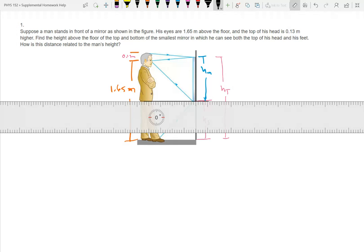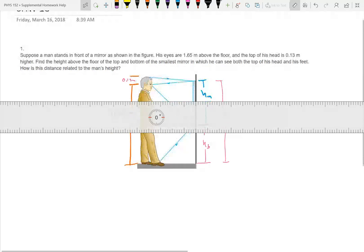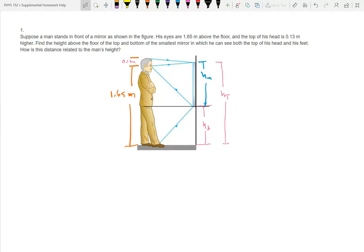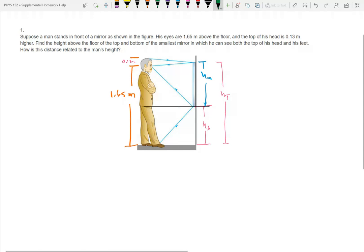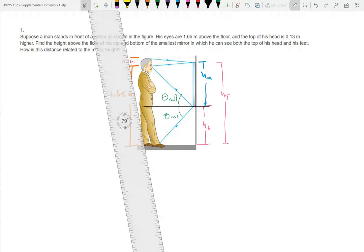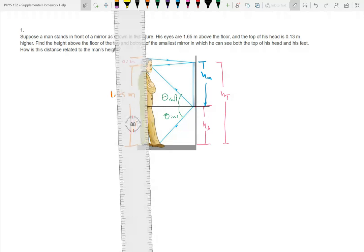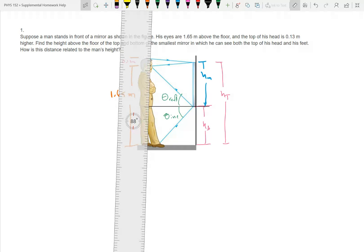Okay, so we have our two similar triangles that, according to the rules of similar triangles, are going to have to have theta incident is equal to theta reflected. And with the assumption that his eyes are directly above his feet...